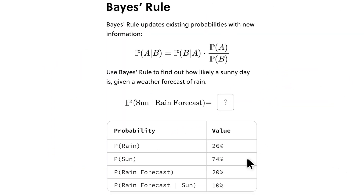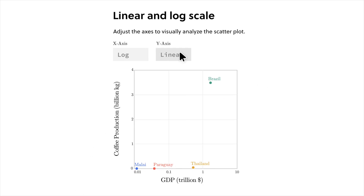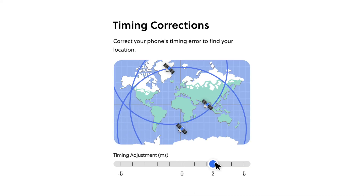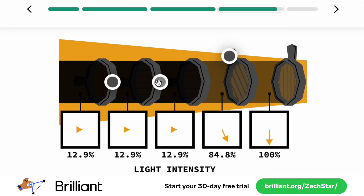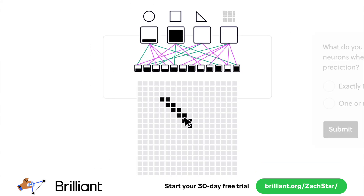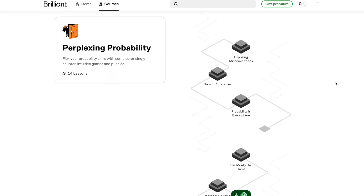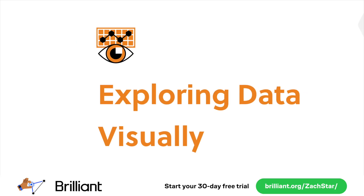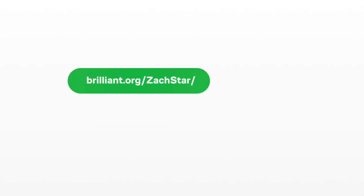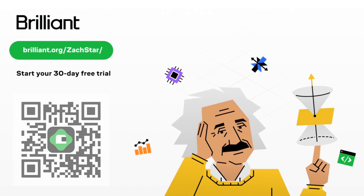Don't believe everything you see on the internet unless you're over at Brilliant, the sponsor of this video. Brilliant is where you learn by doing with thousands of interactive lessons in math, engineering, data analysis, programming, and AI. With a first principles approach, this platform helps you build understanding from the ground up. What I enjoy most are their animations and interactive exercises that help you gain a foundational understanding of even complex topics — not through memorization, but through critical thinking and problem solving. If you like these counterintuitive puzzles, they have several data and probability courses covering problems like Simpson's paradox, the boy-girl paradox, and plenty more. Go to brilliant.org/Zachstar or click the link below to try everything free for a full 30 days. You can also scan the QR code on screen.